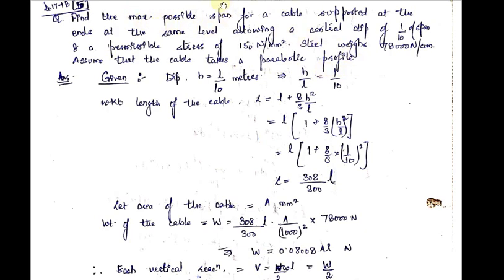We have to find the maximum possible span that can be provided for a cable, keeping in mind the central dip as 1/10th of the span, if the permissible stress of the cable is 150 N per mm². The permissible stress means the maximum stress which can be borne by the cable — if the stress exceeds this value, the cable will fail. The unit weight of steel is 78,000 N per cubic meter. There is no external load acting on the cable, so the only load is its self-weight, which is assumed to act as a UDL.